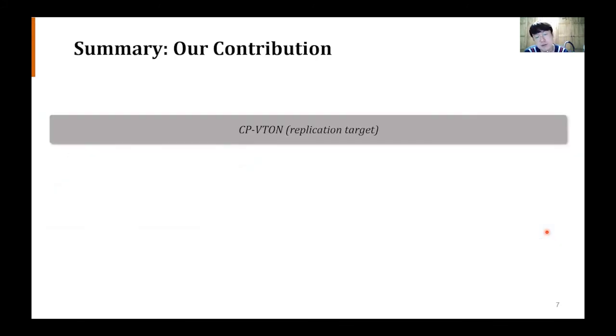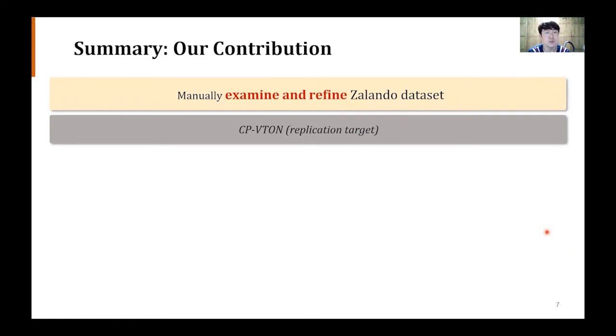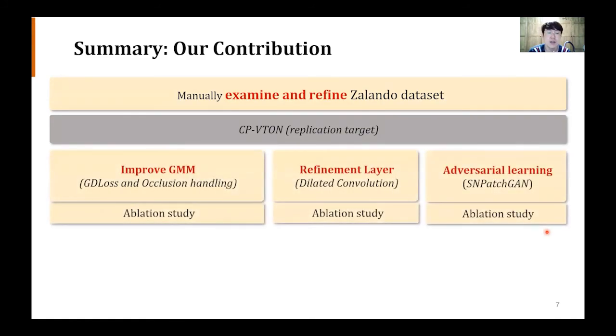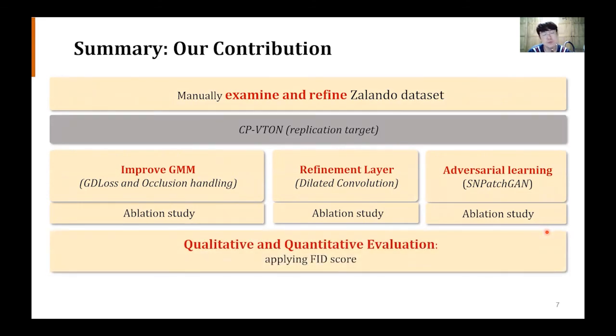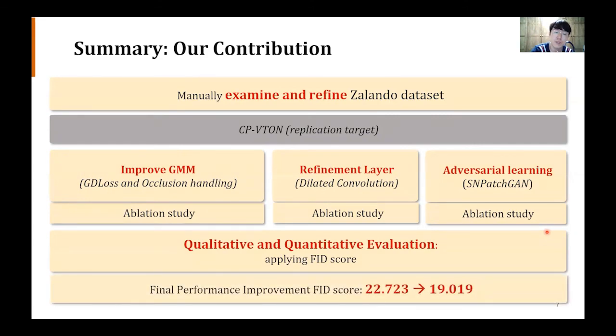In summary, with CPVTON as baseline, we performed the following. First, we examined and refined the Zalando dataset. We implemented three methods to improve the network and performed ablation study for each method. In the evaluation, we performed quantitative evaluation using FID score, which has not been done in existing works. As a result, we can confirm the enhancement in try-on images both qualitatively and quantitatively. Thank you for your attention.